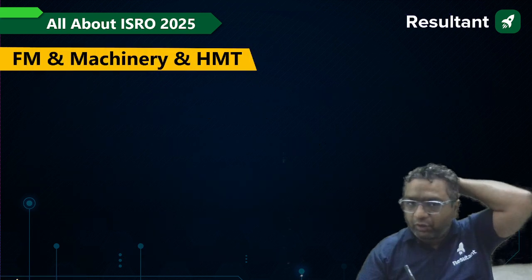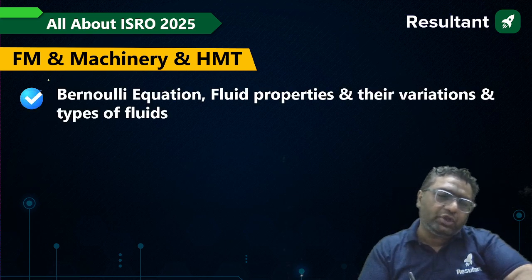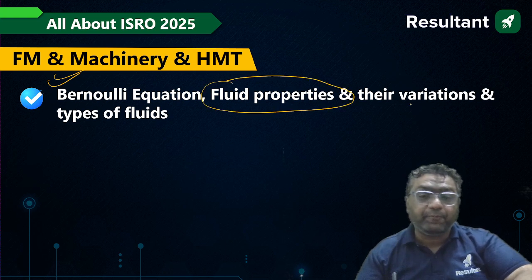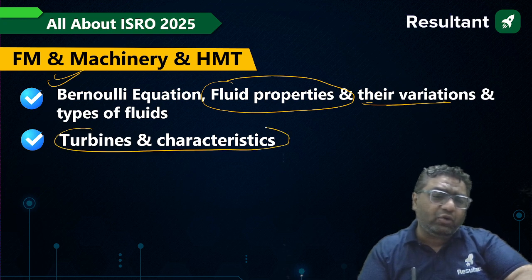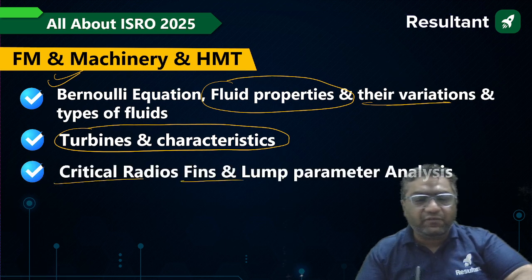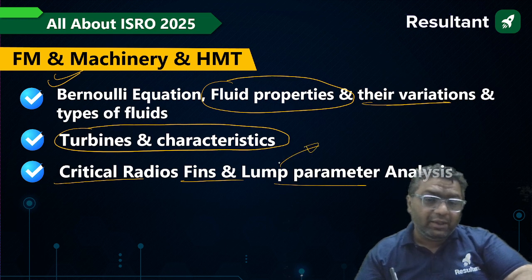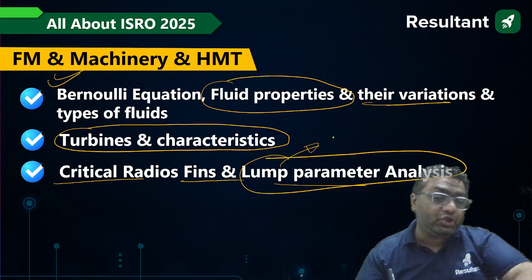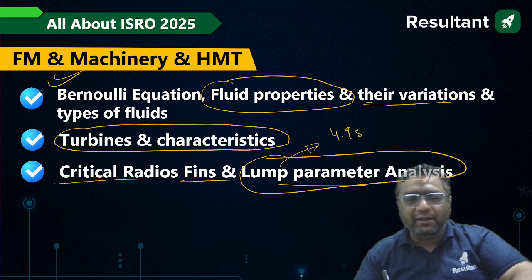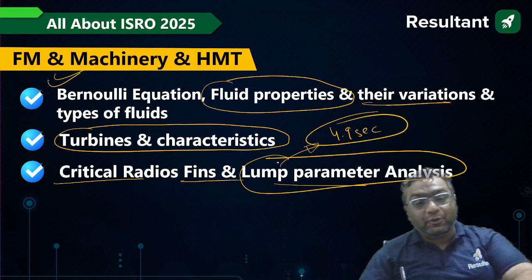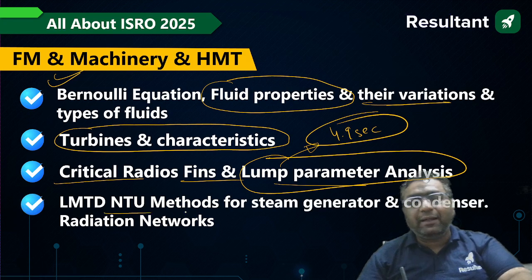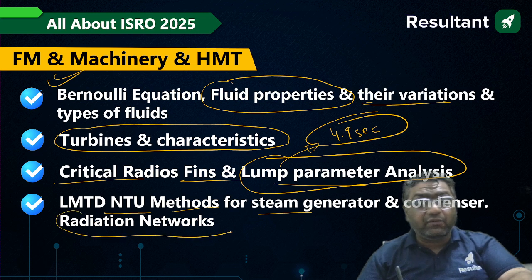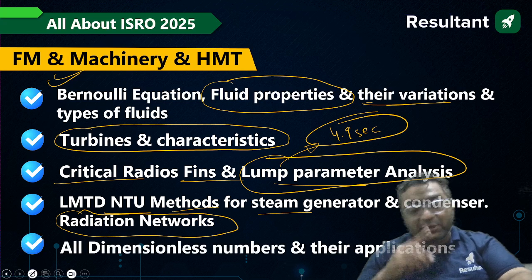For Fluid Mechanics and Machinery, questions from Bernoulli's equation come for sure, fluid properties from the first chapter, and types of fluids. Turbine characteristics have a lot of questions. For HMT, critical radius, fins, and lumped parameter analysis are important — a question from lumped parameter analysis that appeared in GATE was also asked in ISRO twice. Cover NTU method and LMTD method for steam generators and condensers. In radiation, cover types of resistances and all dimensionless numbers with their applications.